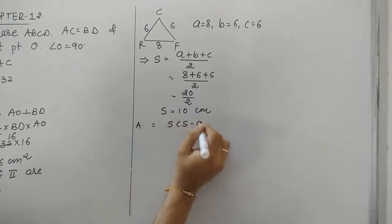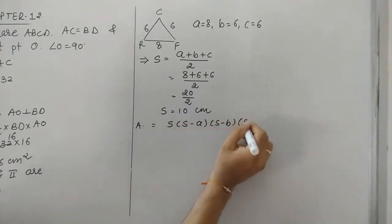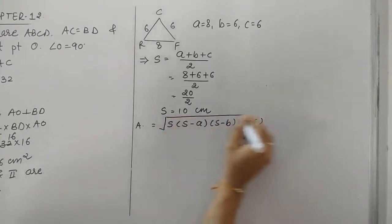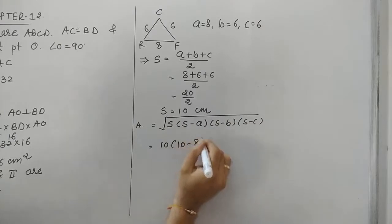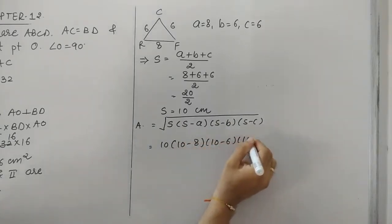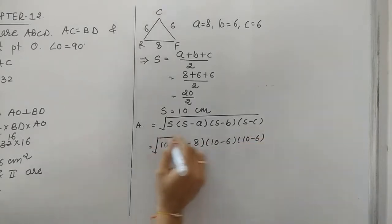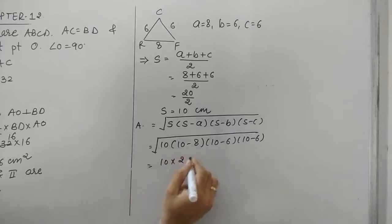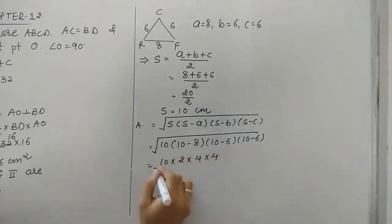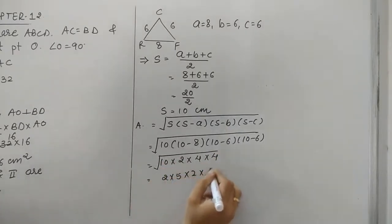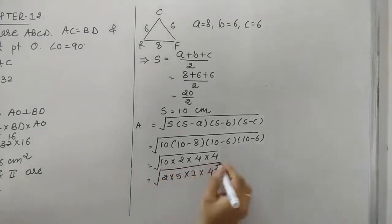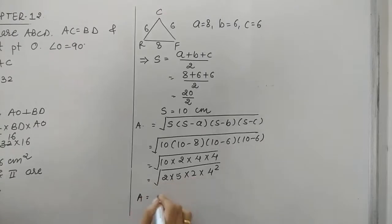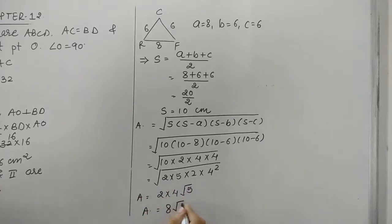Using the formula: area equals square root of s(s−a)(s−b)(s−c). Substituting: square root of 10 × (10−8) × (10−6) × (10−6) = square root of 10 × 2 × 4 × 4. Finding the prime factors: 4 appears twice so we get 4 outside, and 5 and 2 remain, giving area = 8√5 centimeters square.